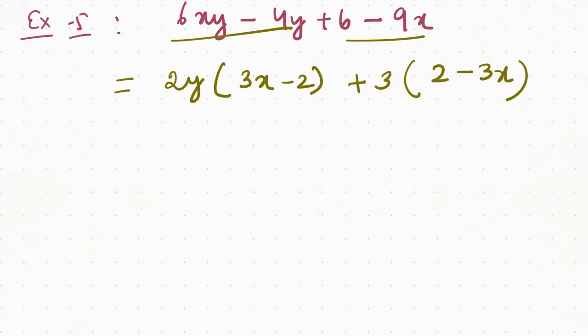If you have 6 and 4, their common factor is 2. So a common thing is that you have to identify groupings. You will have to give a grouping method to make it a grouping method. If we group 4 times, we can make a difference between the groups.